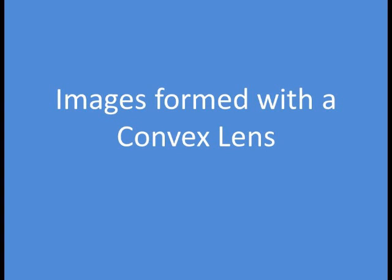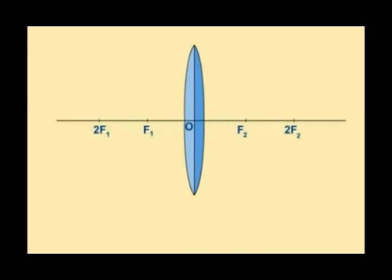In this video tutorial I'm going to show you how images are formed with a convex lens. Here is a convex lens and either side of the lens we've marked the points F which is the focal point, and also 2F.